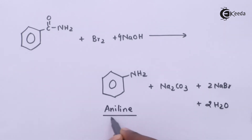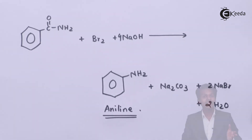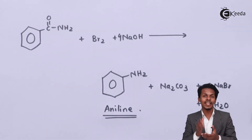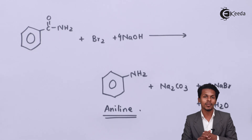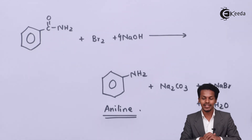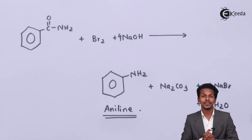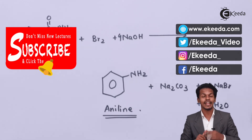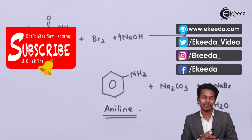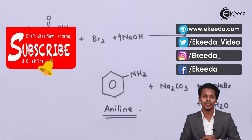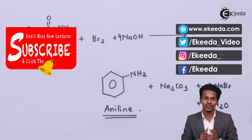So this is how we can convert benzamide into aniline, and this is how aniline is prepared through Hofmann's bromamide degradation. Thank you friends for watching this video. I hope you have understood this clearly, and I hope to see you next time — till then, don't forget to subscribe to the Ikeda channel. Thank you so much.